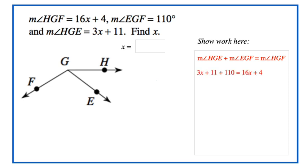m∠HGE + m∠EGF = m∠HGF. We're going to substitute in the values that we're given. 3x + 11 + 110 = 16x + 4. And this is where you bring in your algebra knowledge from prior years. We are going to combine like terms on the left-hand side of that equation. Let's add 11 plus 110. Now let's subtract 3x from both sides of the equation.